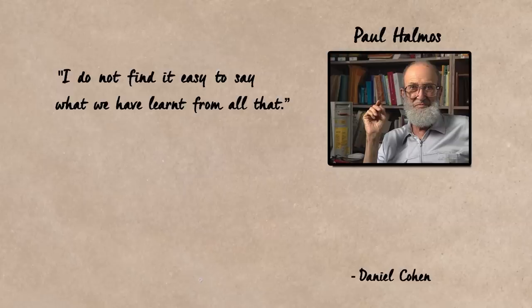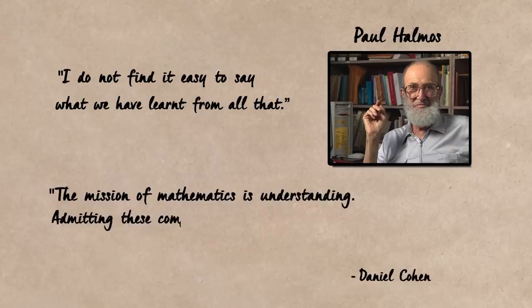So there you have it Guthrie, there's your answer. But this feels very different to the proof of the five colour theorem. We don't really know why it works. The computer could have just as easily returned a no and we wouldn't have learnt anything different. The mathematics community had a lot of trouble accepting this as a proof. The mathematician Paul Halmos said, I do not find it easy to say what we have learnt from all that. And Daniel Cohen said, The mission of mathematics is understanding. Admitting these computer shenanigans to the ranks of mathematics would only leave us intellectually unfulfilled.